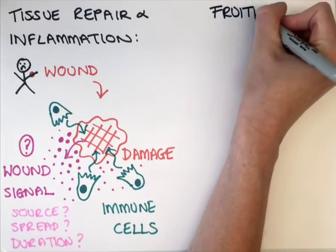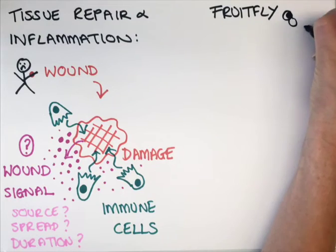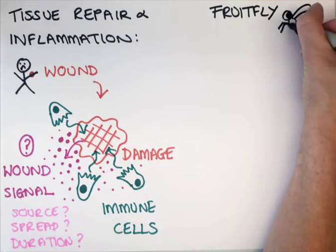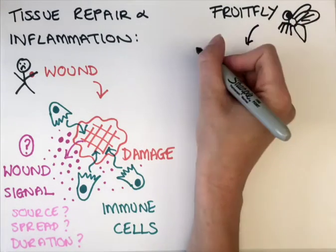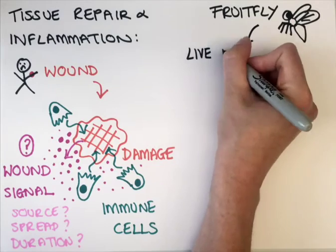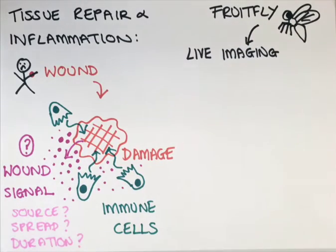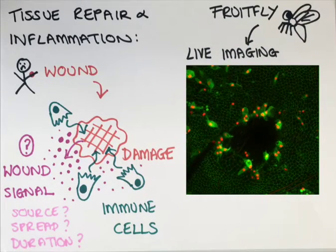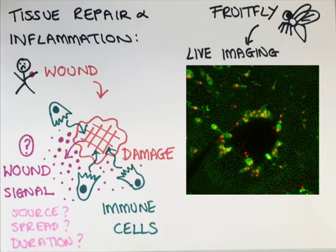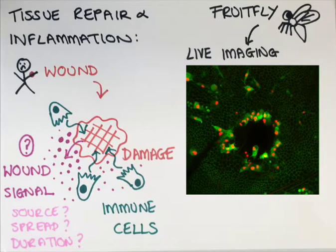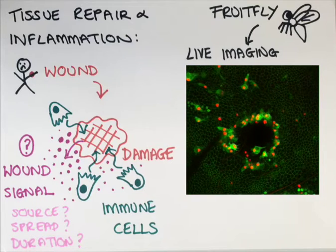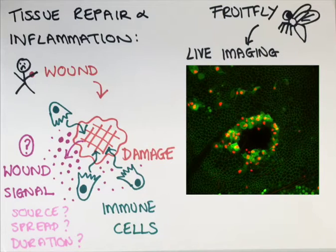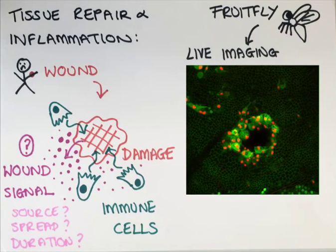We've used the fruit fly Drosophila to live image the recruitment of immune cells into the wound in vivo at high spatial and temporal resolution. You can see, as the wound closes, immune cells are rapidly recruited into the damaged area. By labelling the nuclei of the immune cells, here in red, we can easily track their paths.